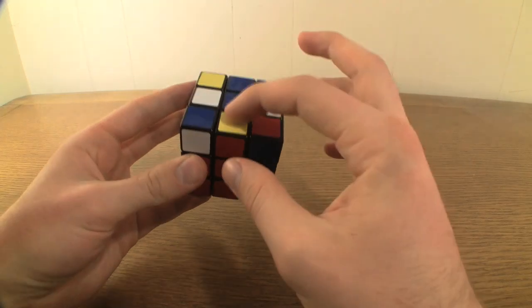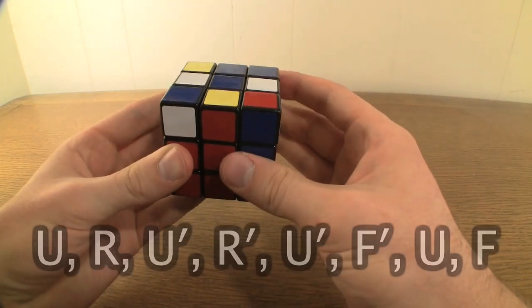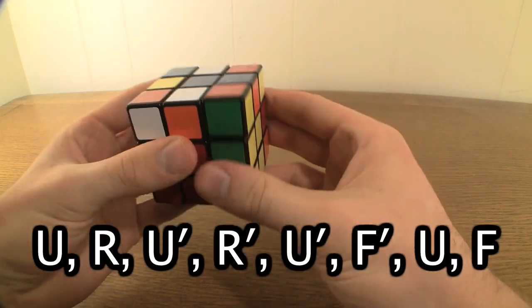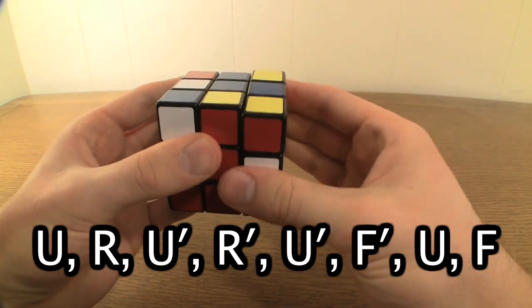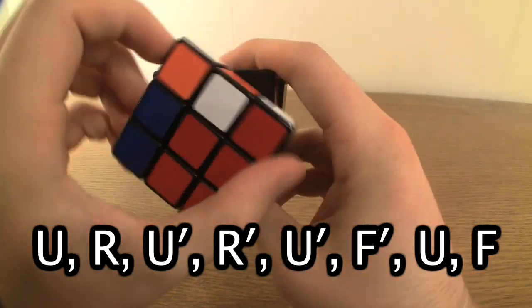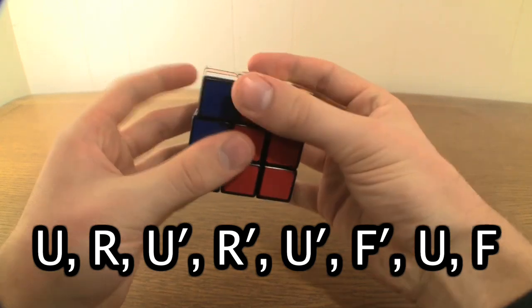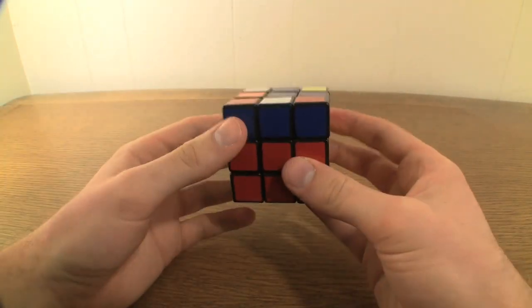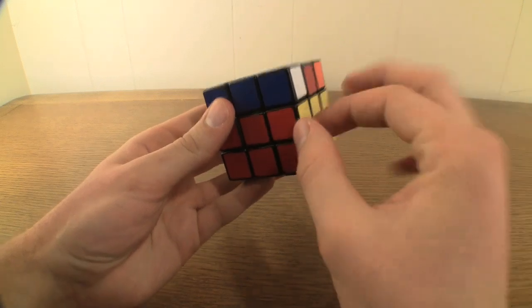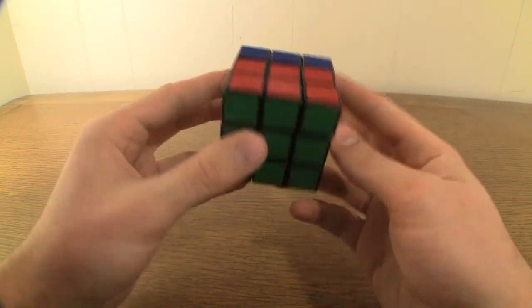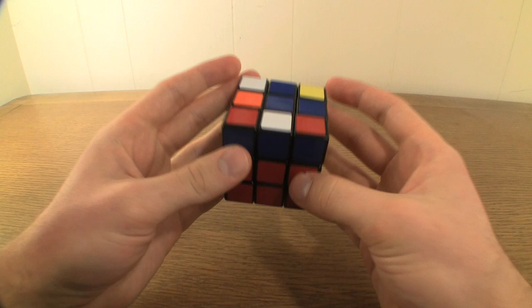If this is the right face, perform the algorithm U R U' R' U' F' U F. If done correctly, whichever edge piece is in question will now be in the correct place, oriented the correct way, and what you've already done will not be messed up at all.